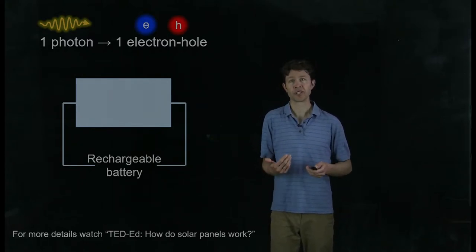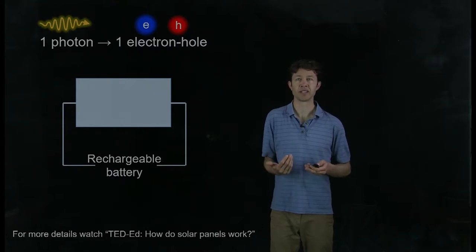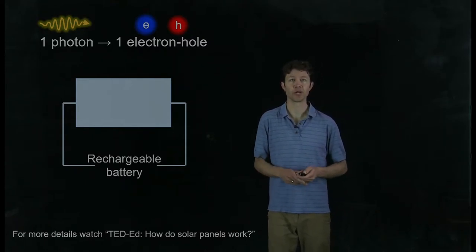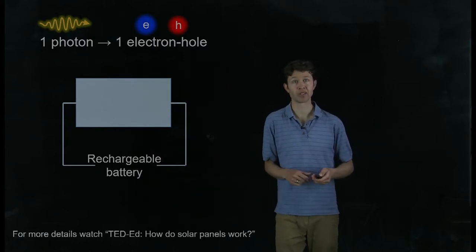What if there's a material where this assumption doesn't hold true, where one photon maybe could make more than one electron-hole pair? Let's have a look at what might happen in carbon nanotubes.